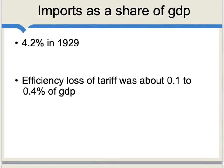Here's the key point for why Smoot-Hawley was not a driving force behind the Great Depression. If we look at imports as a share of GDP in 1929, we find that imports were about 4.2% of GDP — just not that big a chunk of the economy. Irwin estimates that, given imports were relatively small, the efficiency loss of this tariff was about 0.1% to 0.4% of U.S. GDP. Virtually all economists agree the tariff was a bad idea — it cut off a lot of trade and lowered business confidence — but in quantitative terms, this simply isn't nearly large enough to be a driving force behind the Great Depression.